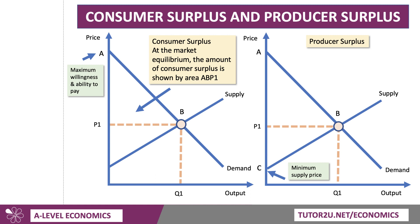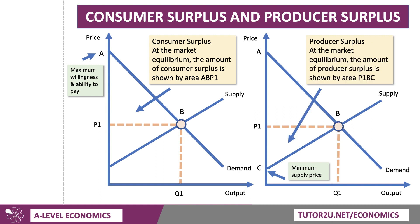C is the minimum supply price. So if the price falls below C in the market, then producers will not be willing or able to supply any amount to the market. Of course, the producer is assumed to be getting price P1 for each of the units up to Q1. So producer surplus at the market equilibrium is the amount shown by the area P1, B, C.